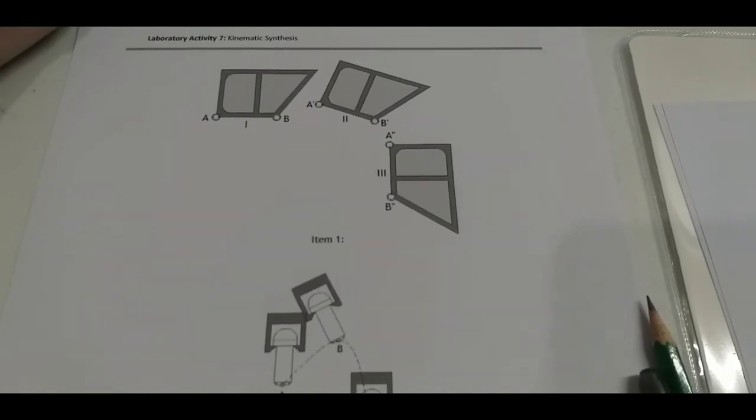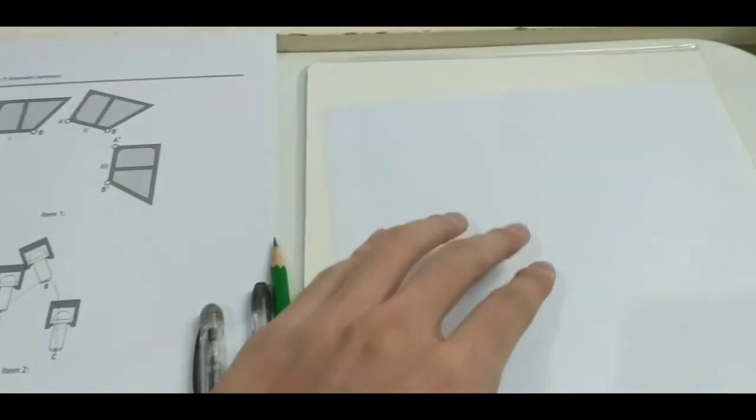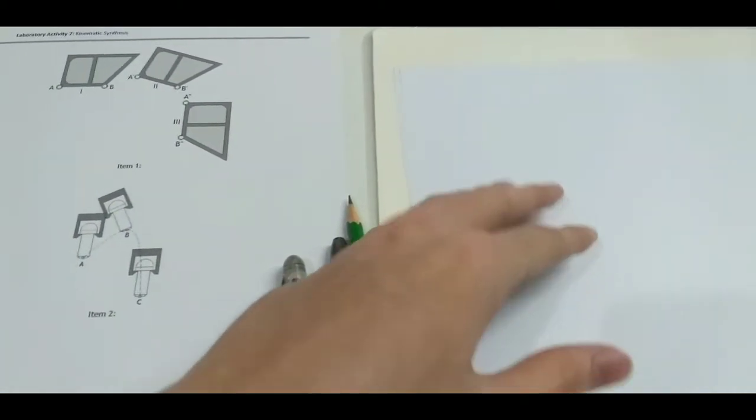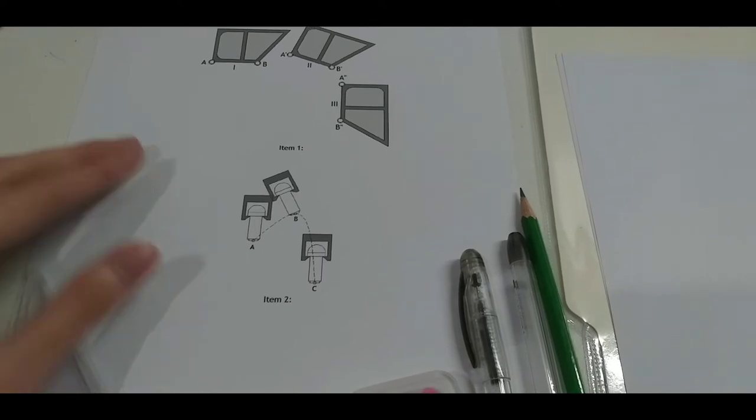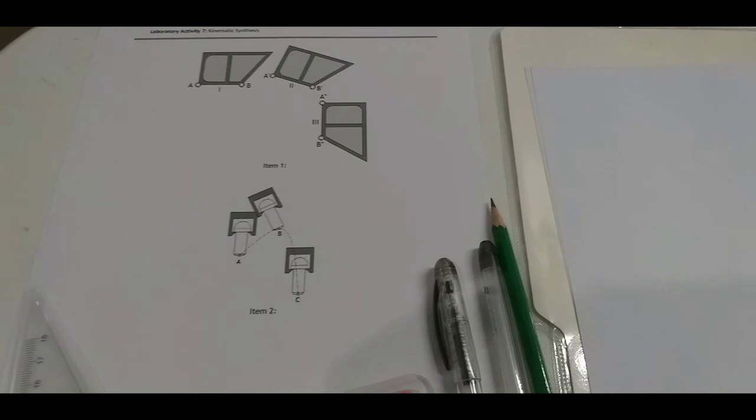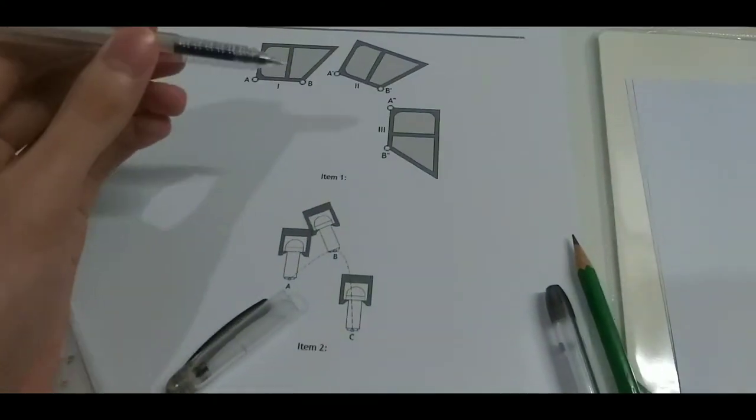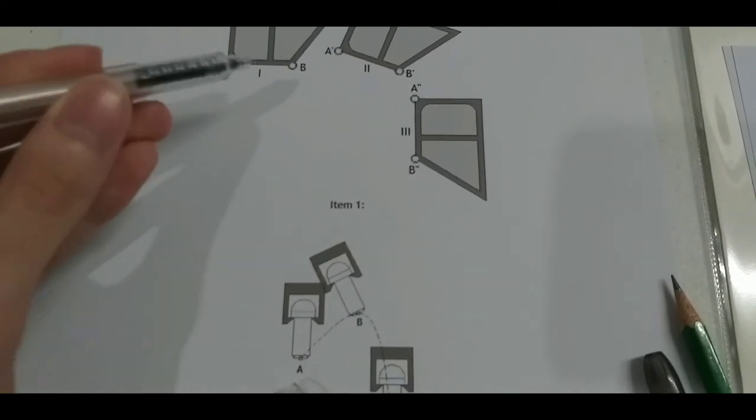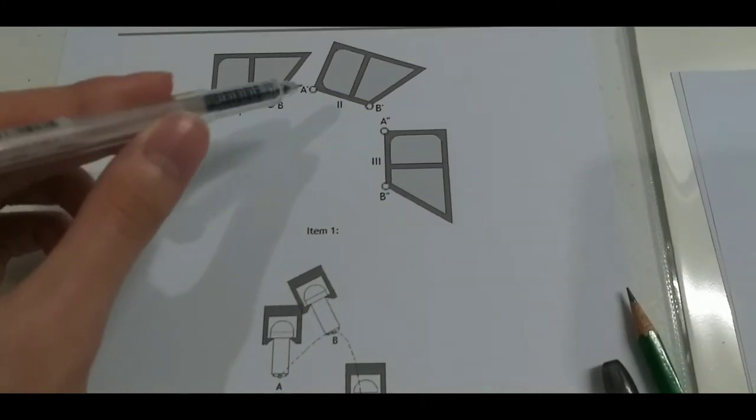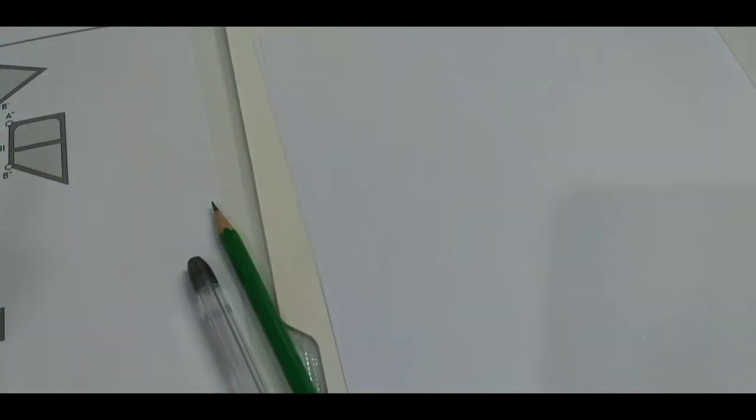Now what we need to do is trace this figure into another sheet of paper and we'll synthesize using graphical method. So what I'll do first, I'll use a black pen and then I'll carefully outline what we need to trace and rewrite it so it's much more clear. I'll show you what happens next.